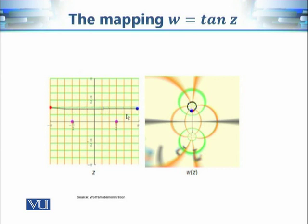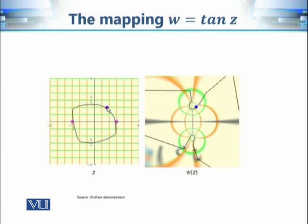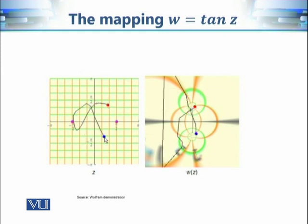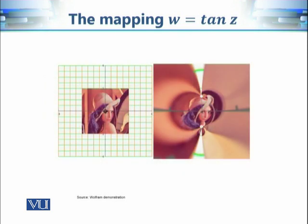Line segments parallel to the real axis are mapped onto tiny circles, while line segments parallel to the imaginary axis are mapped onto circular arcs. So the image of a roughly square region consists of two circular arcs and very tiny circular arcs. These tiny circles are images of the lines parallel to the real axis, and if we choose any random region in the z-plane, we can find its image similarly.